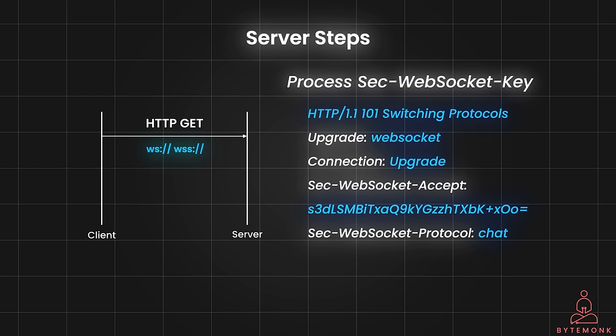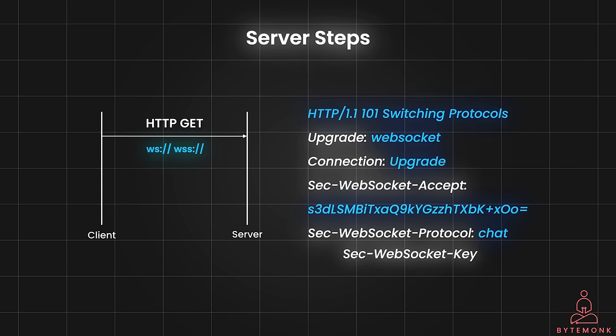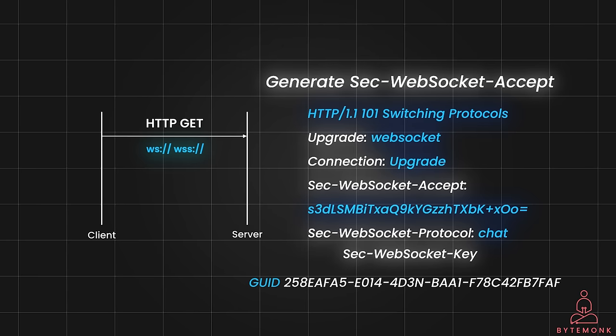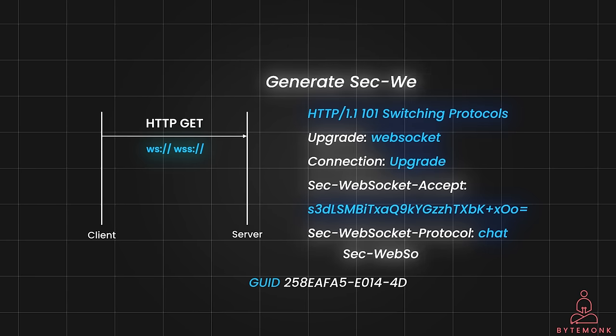The server receives the base64-encoded string from the Sec-WebSocket-Key header. It then generates a new string by concatenating the received Sec-WebSocket-Key with a predefined UID, and then applies a cryptographic hash function such as SHA1. This new string is then base64-encoded.